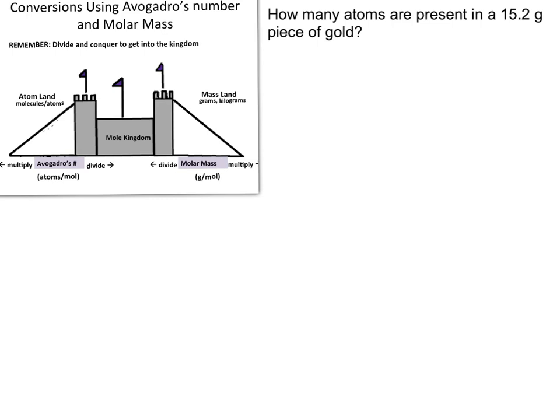So in the problem that we see here, what they've asked us is to calculate how many atoms are present in a 15.2 gram piece of gold. So what that's telling us is that we've been given 15.2 grams and that they want us to get into atoms.